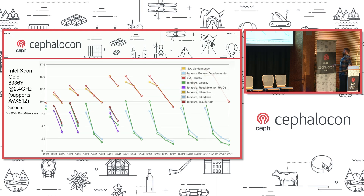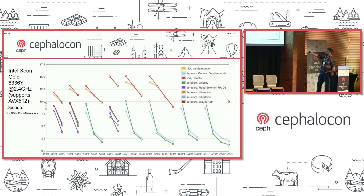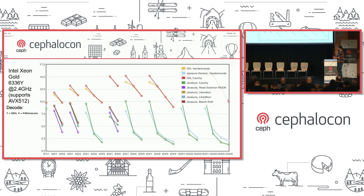This is a decoding graph on the same Intel CPU, with gigabytes per second on the y-axis and K, M, and number of erasures along the bottom. Number of erasures refers to how many chunks are deleted and then rebuilt. The same takeaway applies: ISA-L achieves about four or five times the decoding performance over JErasure. JErasure's additional optimized techniques — Cauchy optimization and RAID 6 optimizations — don't provide a significant improvement over Reed-Solomon Vandermonde mode.